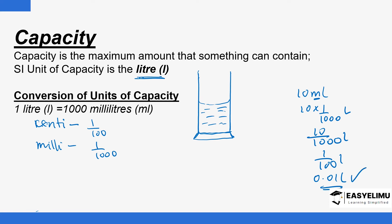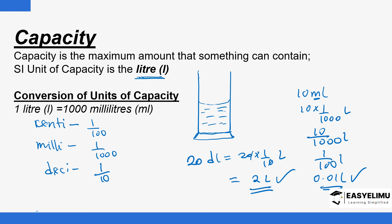We still use the prefixes: milli, centi, desi. Desi stands for one over ten. So you can talk of 20 deciliters — desi stands for one over ten, so it will be 20 times one over ten liters, which is two liters. So we can conclude that one liter is one thousand milliliters. Let's see how units are converted.